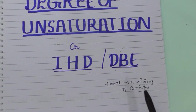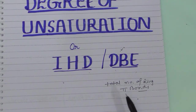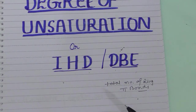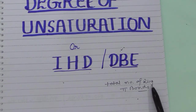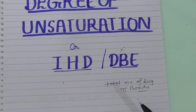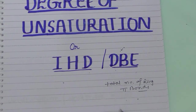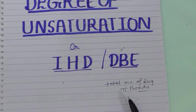The degree of unsaturation determines the total number of rings and pi bonds in a molecule. If you can find the number of double bonds, you can easily find the number of rings and pi bonds, including triple bonds. However, this formula does not give any information about the components individually — we get one overall value, not the direct structure.